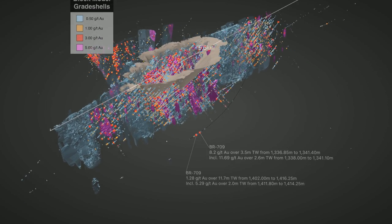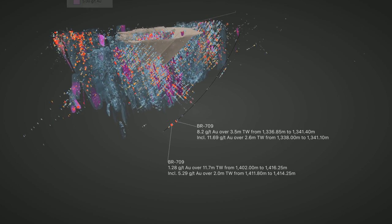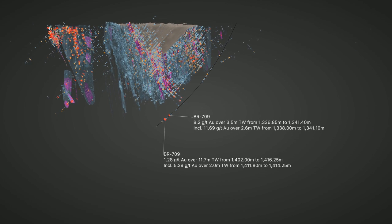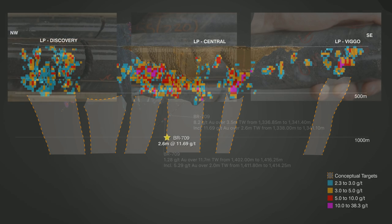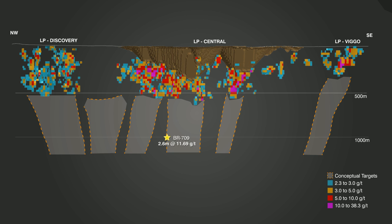Recent deep drilling has intercepted high-grade mineralization below the resource including hole BR 709 which intercepted 3.1 meters of 11.7 grams per tonne at a depth of 1 kilometer and hole BR 695 which intercepted 9.6 meters at 10.5 grams per tonne at a depth of 1.3 kilometers.